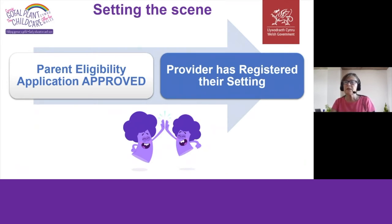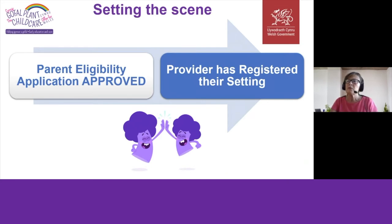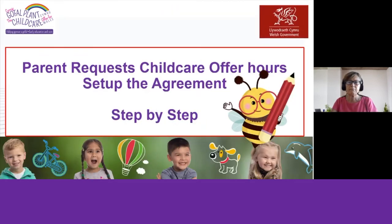Therefore, you as providers will expect to see the agreement on your screens when the parent submits it. It will be up to you as providers to review the request for the childcare offer hours and accept. The parent, local authority, and your setting will all be able to view the agreements, and each one has specific roles. The parent requests the childcare offer hours — that is, sets up the agreement. This is not a booking in the system at all; the purpose of the agreement is to ensure the parent and child can access the childcare offer hours through you.